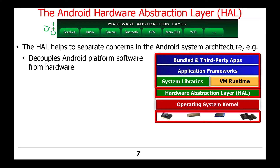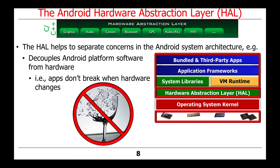In particular, the Android HAL helps to decouple the Android platform software from the hardware because the hardware will keep changing and evolving over time, but we don't want to have the Android software stack rewritten repeatedly in order to accommodate changes that inevitably occur in the hardware. The goal of all this, of course, is to make sure that the apps don't break when the hardware changes.